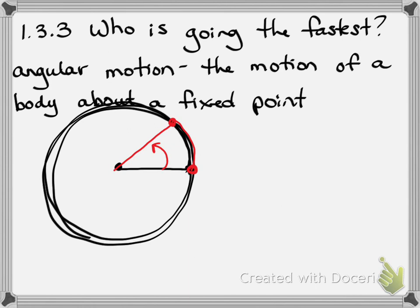Angular motion is used to describe the motion of planets, pendulums, and objects such as wheels – very useful today. It's generally measured in the change in the angle versus the change in time.